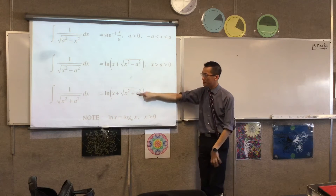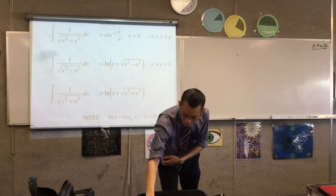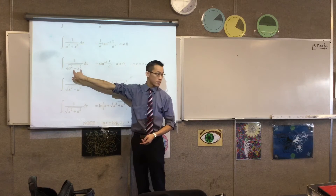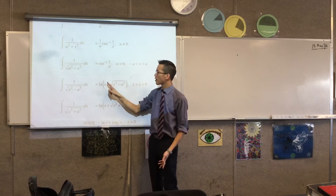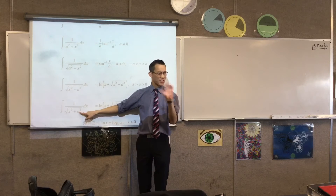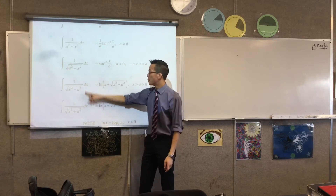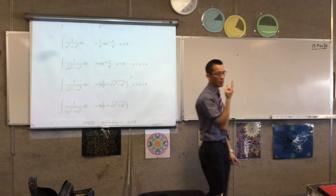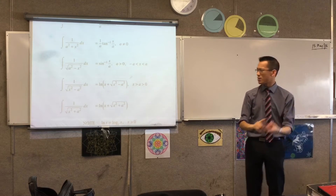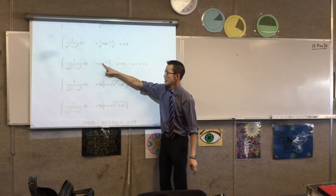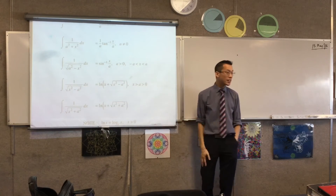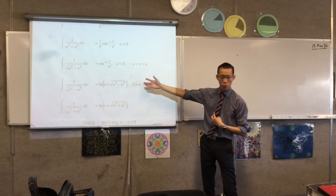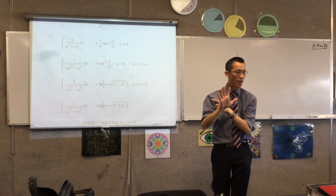These two results kind of marry together — you can see how they connect. When you've got a sum of squares on the bottom, you're going to tan inverse. When you've got the square root of the difference of squares, you get sine inverse. But if you combine them or reverse things, it's not quite sine inverse and not quite tan inverse. You've got a square root but no subtraction — a sum instead. Switching things around can make a big difference; it's the difference between an ellipse and a hyperbola. We're going to prove one of them — questions four and five in exercise 5.3.